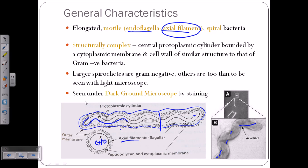All different types of spirochetes have this endoflagella or axial filament. They are structurally complex, having a central protoplasmic cylinder bounded by a cytoplasmic membrane and a cell wall. Larger spirochetes are gram-negative; others are too thin to be seen in light microscopy, so we use dark ground microscopy (DGM) or fluorescent microscopy for visualization.